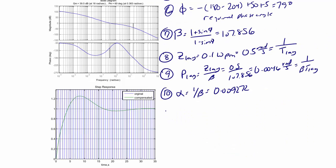And now we calculate the zero for the lead compensator, step 11. Z lead is equal to omega pm times the square root of alpha, which is also equal to 1 over t lead, and it is 0.481 radians per second.